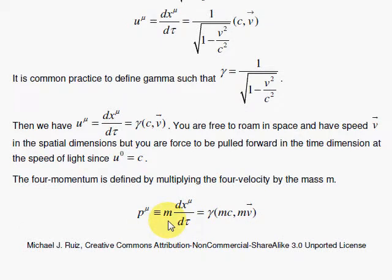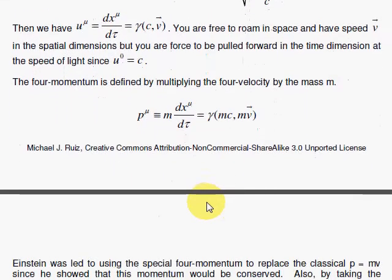Then the four momentum is, by definition, the mass times the four velocity. This is the form of the momentum that's relativistically correct and gives you conservation of momentum.